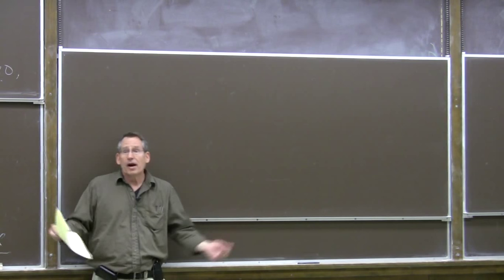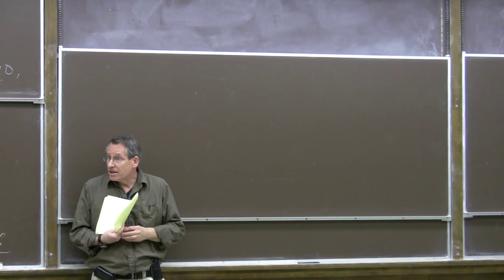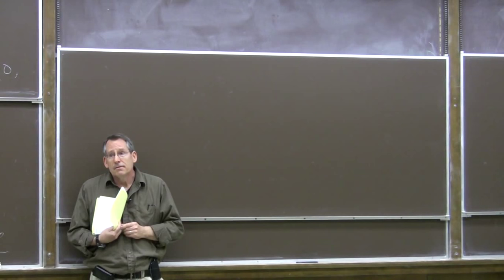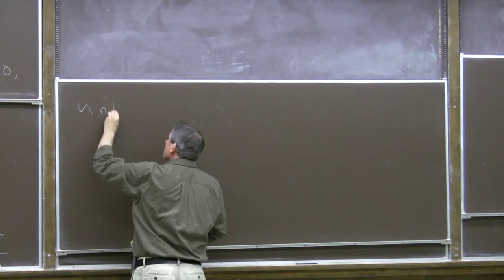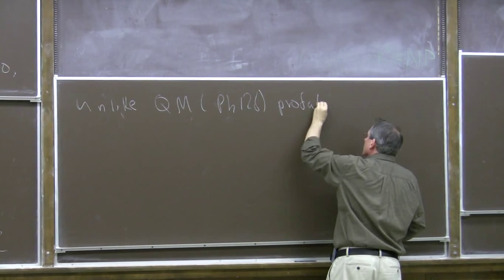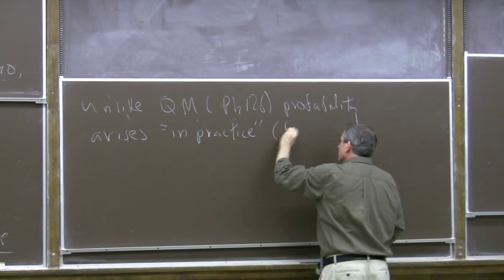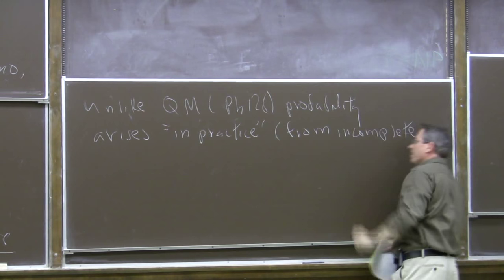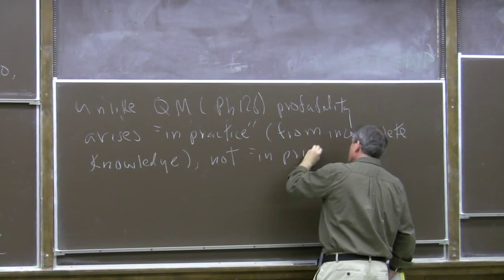That's not what we're talking about here. What we're talking about is that probability arises in practice, because we don't have a complete description of the system. There are many possible microscopic states and we don't know which one. But we don't need to know, because all these microscopic states that occur with reasonable likelihood lead to similar behavior. Unlike quantum mechanics — as in Physics 12b — this is probability that arises in practice, because we don't have complete knowledge of the system's actual state, not in principle as in the quantum measurement process.